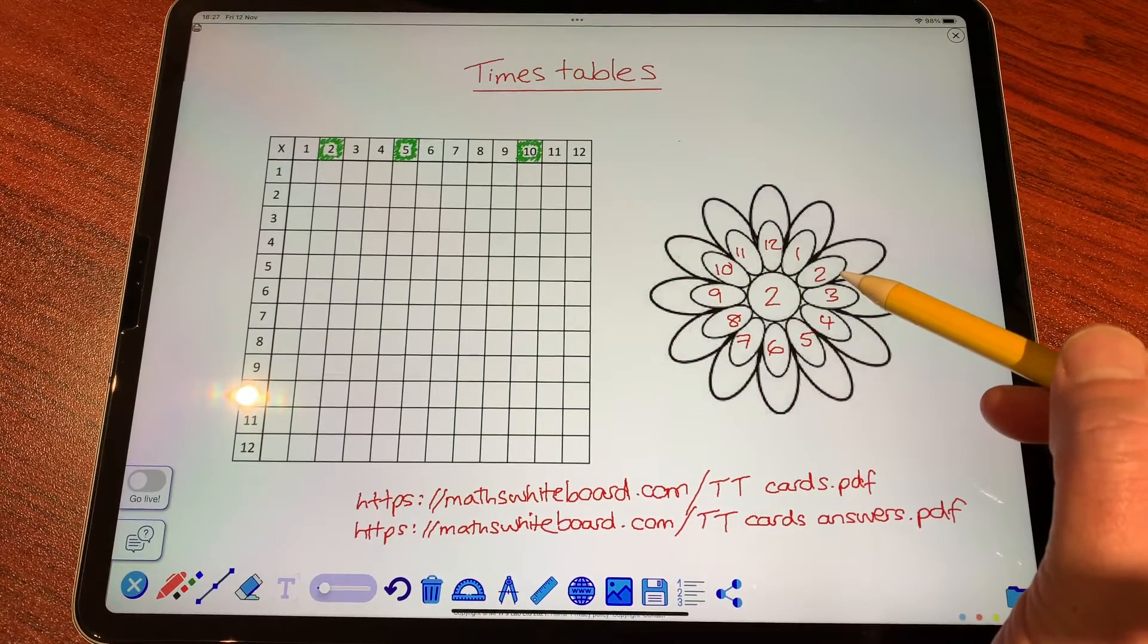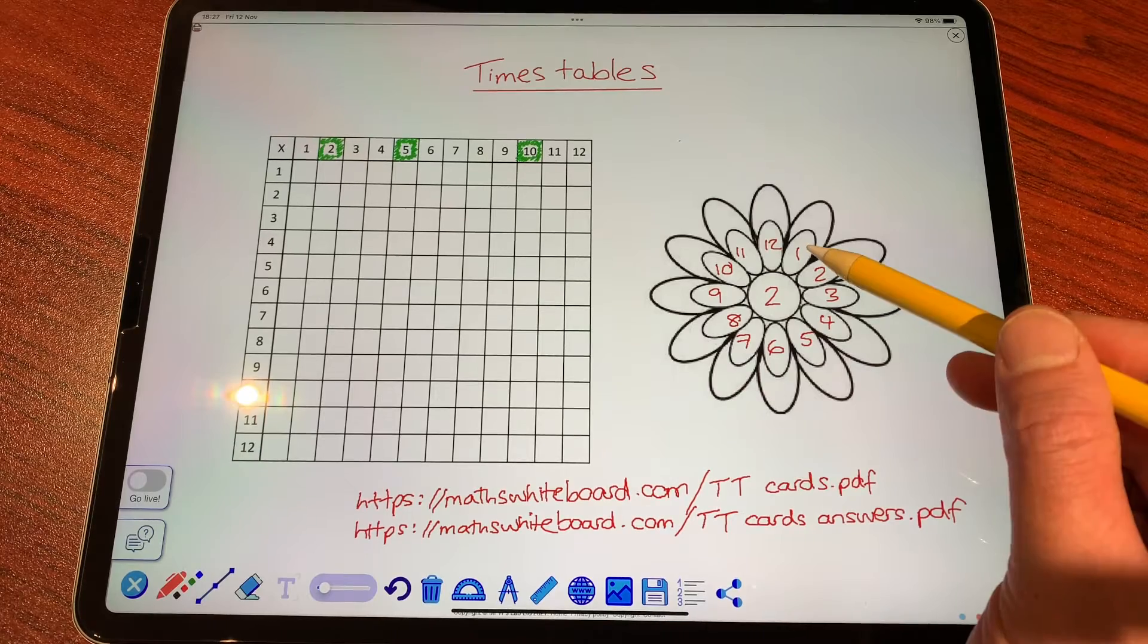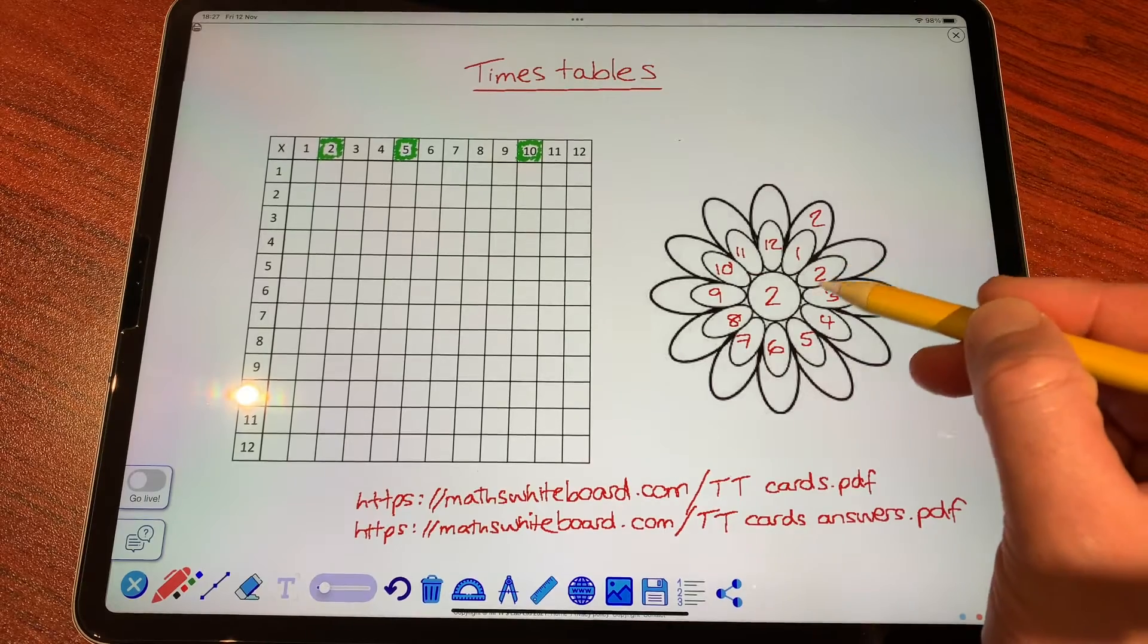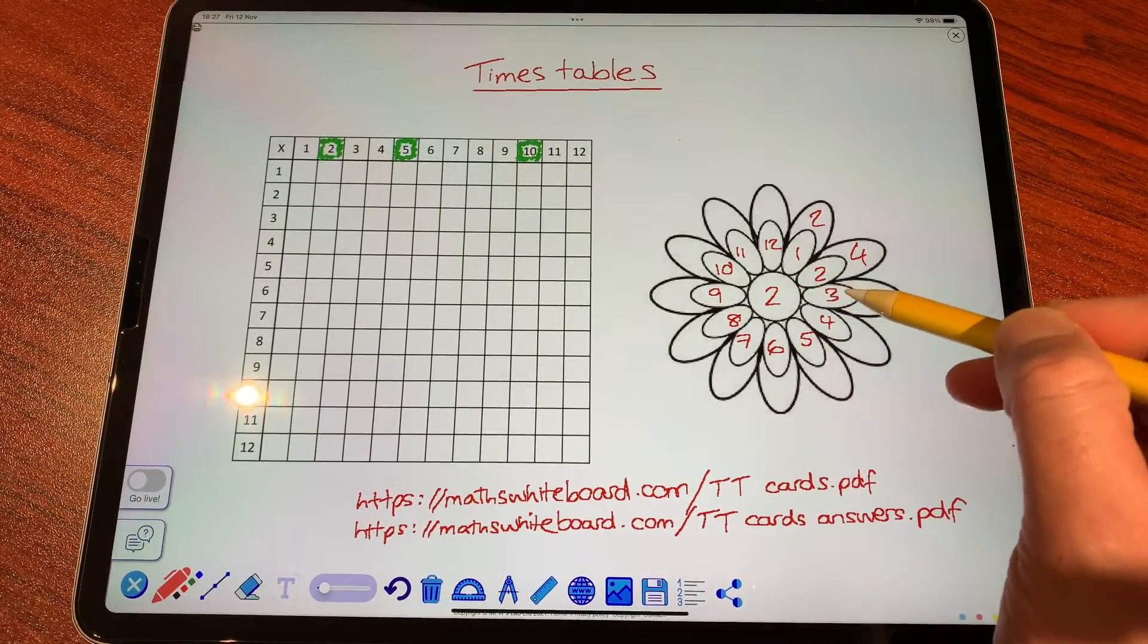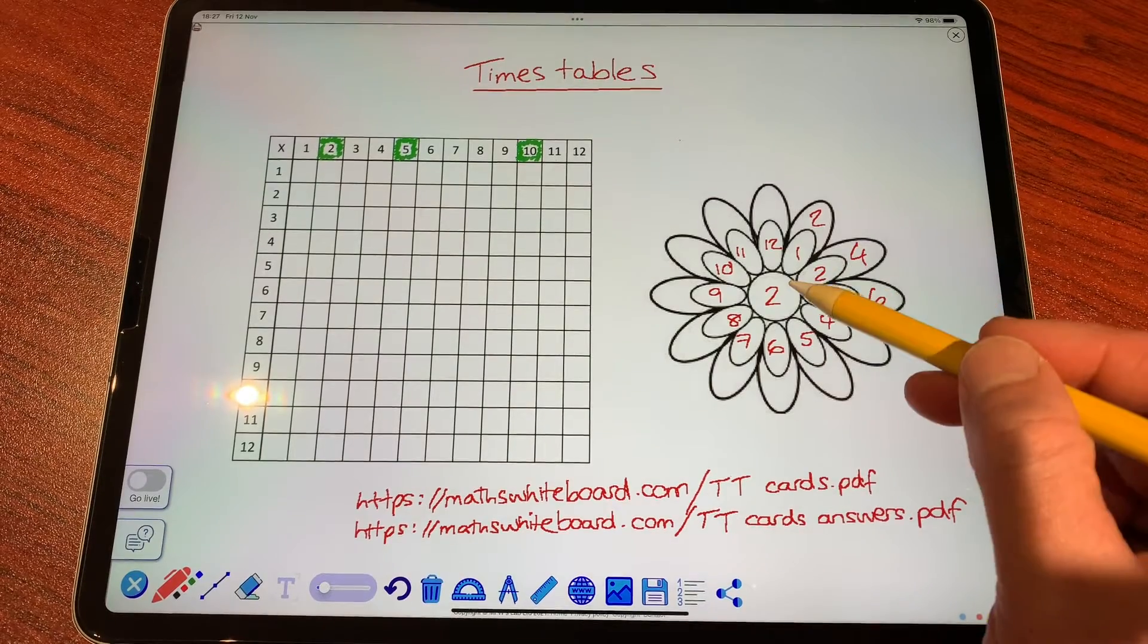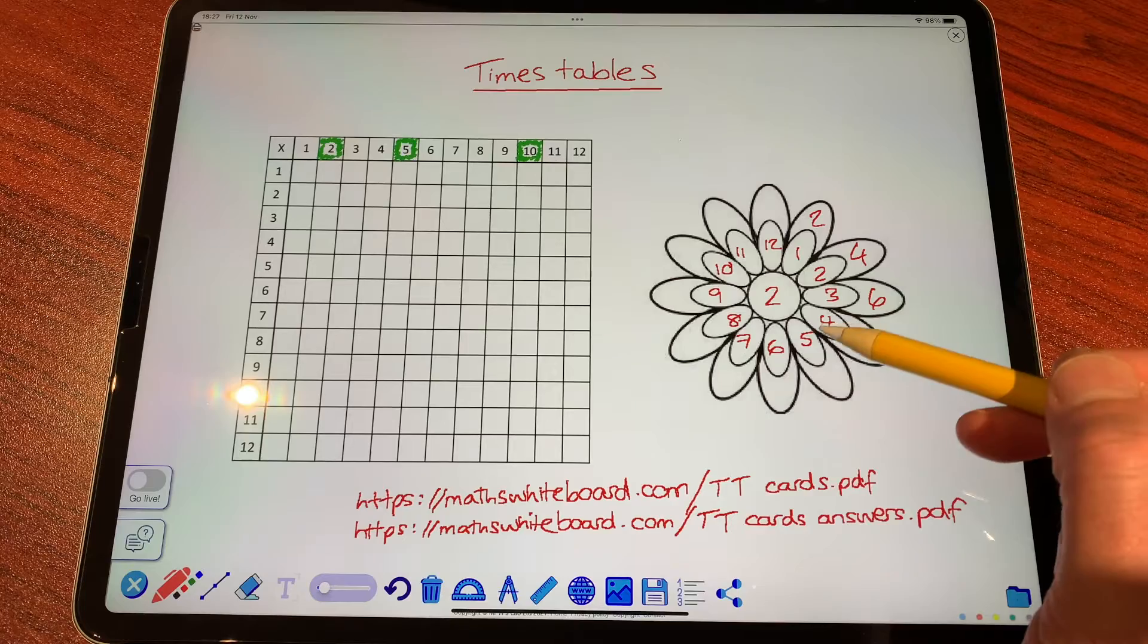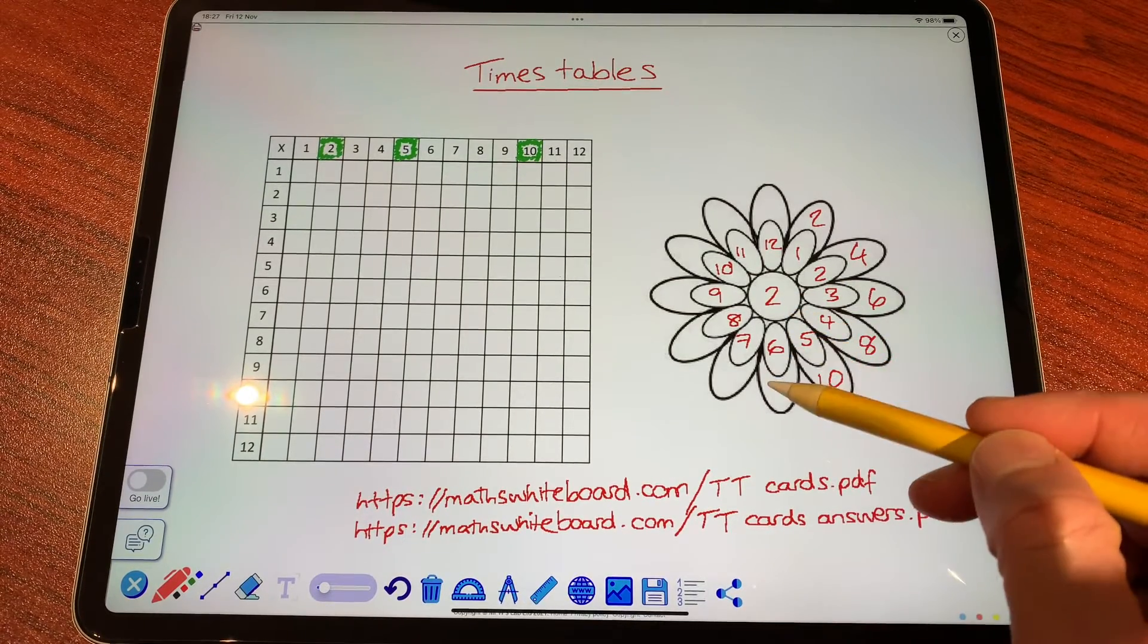Reciting tables is one of the nicest ways of it actually going into long term memory. So let's begin by 1 times 2 is 2, 2 times 2 is 4, 2 times 3 is 6, 2 times 4 is 8, 2 times 5 is 10, 2 times 6 is 12.